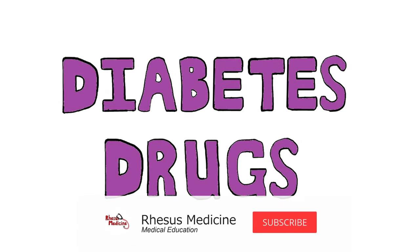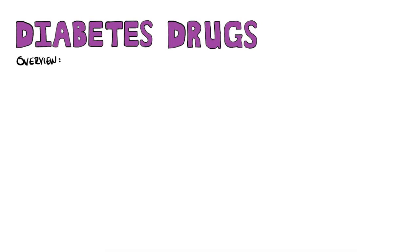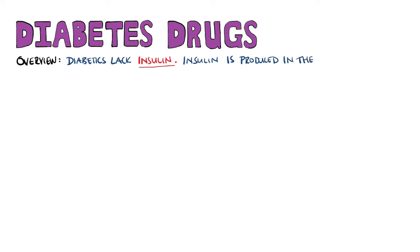Diabetes is one of the most common conditions worldwide, and in this video we're going to go through the different drugs used to treat diabetes. We're going to cover many drug classes, including which diabetic patients need which medication, how they work, and the potential side effects. Diabetes is characterized by a relative lack of insulin, the hormone produced in the beta islet cells of the pancreas, which causes glucose to be taken up from the blood into the tissues.